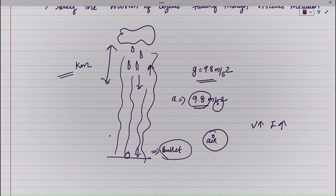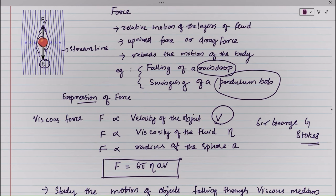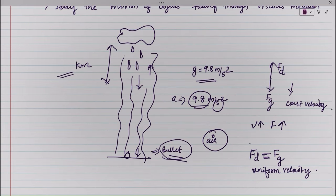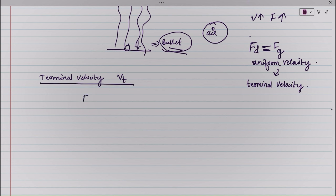Finally, when the viscous force plus buoyant force becomes equal to the force due to gravity — that is, the gravitational force and the dragging force become equal and opposite — there will be no acceleration. The object then moves with a constant velocity called the terminal velocity.